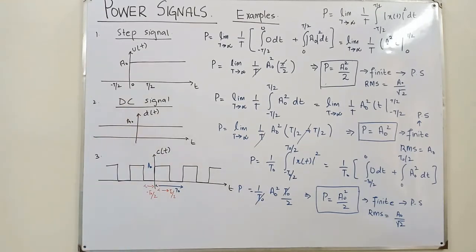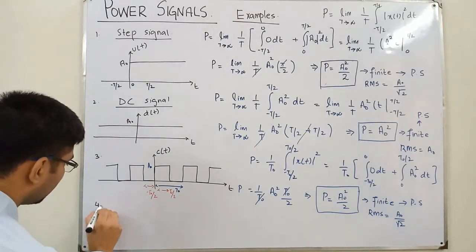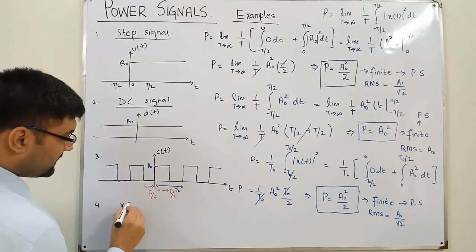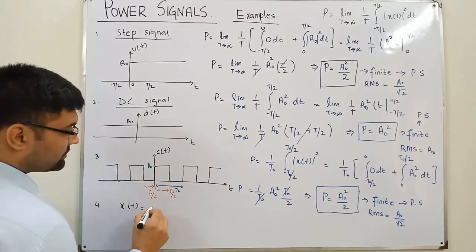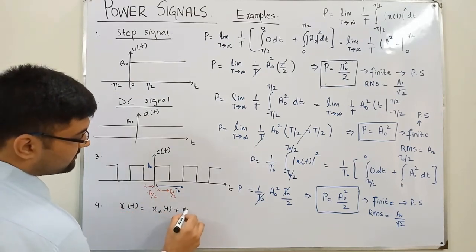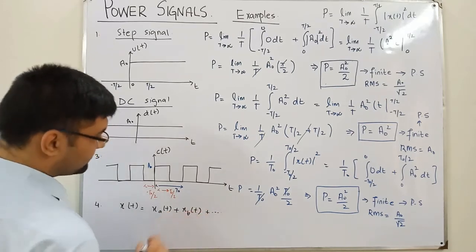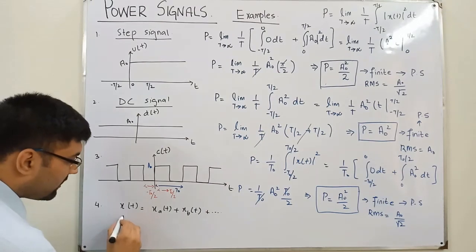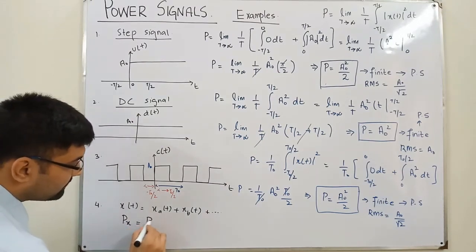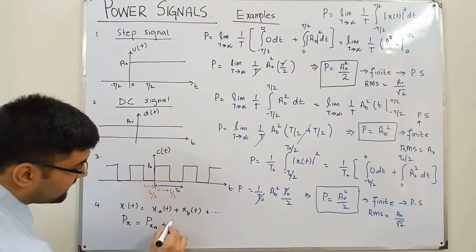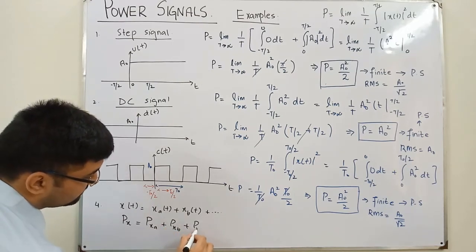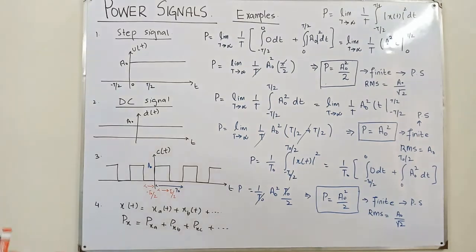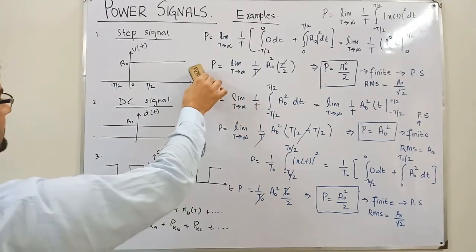Now there is one other property — property number four: if a signal x(t) equals the sum of two signals x_a(t) + x_b(t) and so on, then the power of x(t) equals the sum of the powers of its constituent signals.